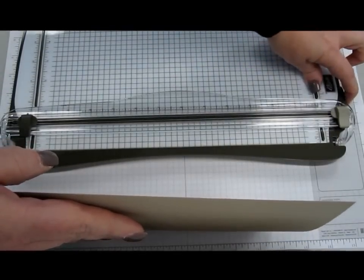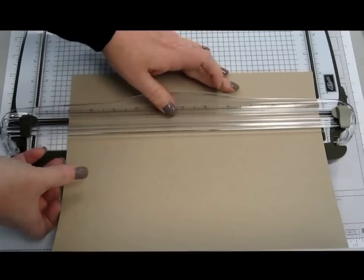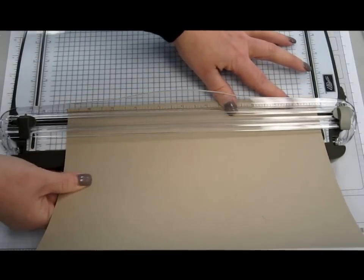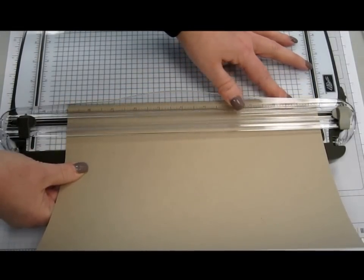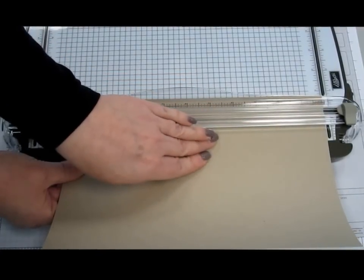So I'm going to unlock that, lift this up. This is an eight and a half by eleven sheet of crumb cake cardstock. I'm going to line that up on the three quarter inch line and I'm going to go ahead and just lock that right back into place.